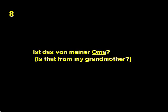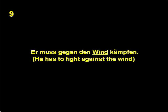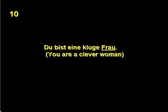'Ist das von meiner Oma?' — Is that from my grandmother? In this sentence, 'Oma' is dative because it is the object of a dative preposition, von. 'Er muss gegen den Wind kämpfen.' This noun is accusative because it is the object of an accusative prepositional phrase beginning with gegen. 'Du bist eine kluge Frau.' 'Frau' is nominative because it comes after a conjugation of sein, which in this case is bist.